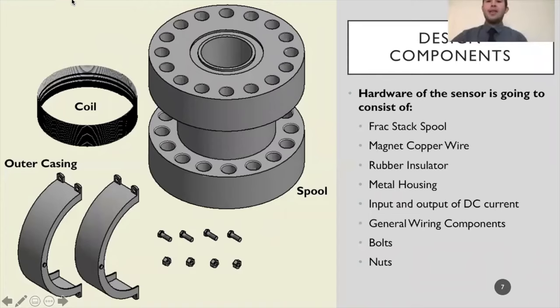Shown on the left is the main design components that our sensor is going to consist of. Some of the main ones being the spool, the coil, the outer casing, nuts and bolts. Some of the smaller components are general wiring components such as a fuse and a resistor, as well as the rubber insulator and a gasket.